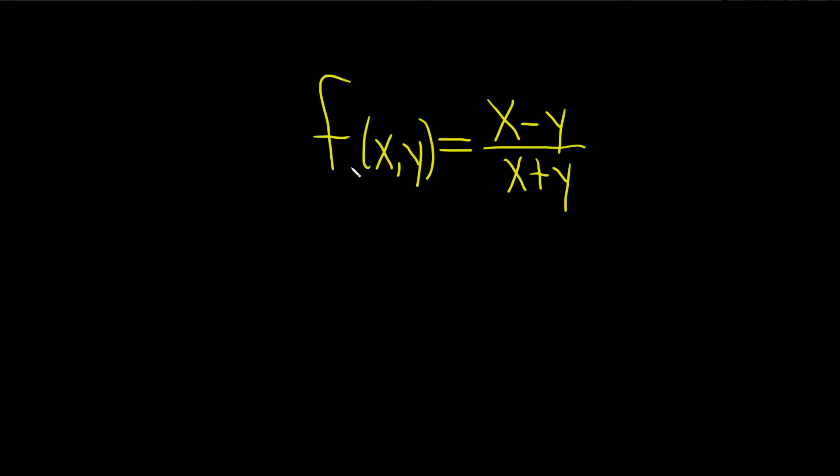Find the partial derivative of this function with respect to x. So here we're going to use something called the quotient rule. So the quotient rule says